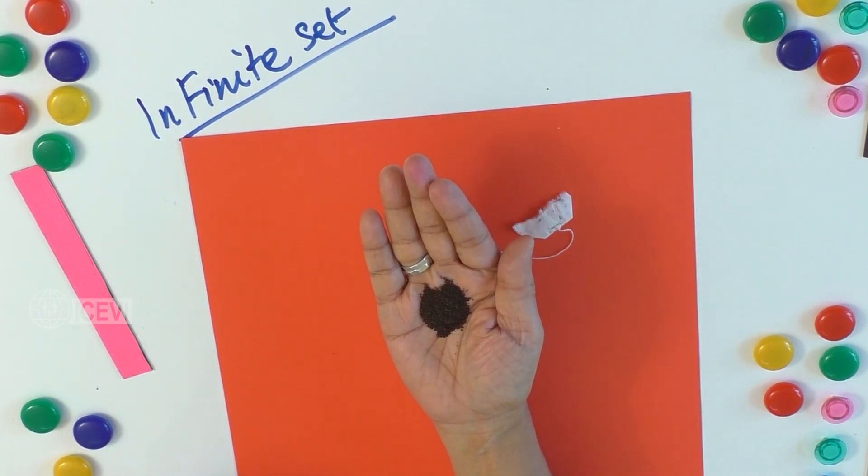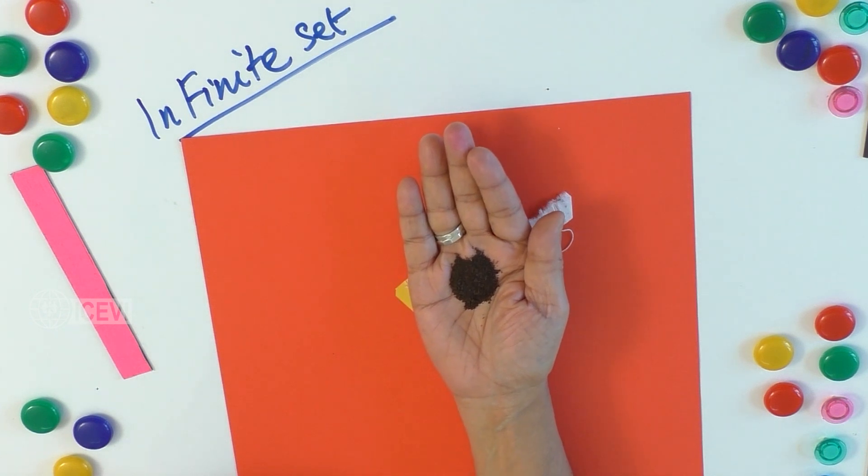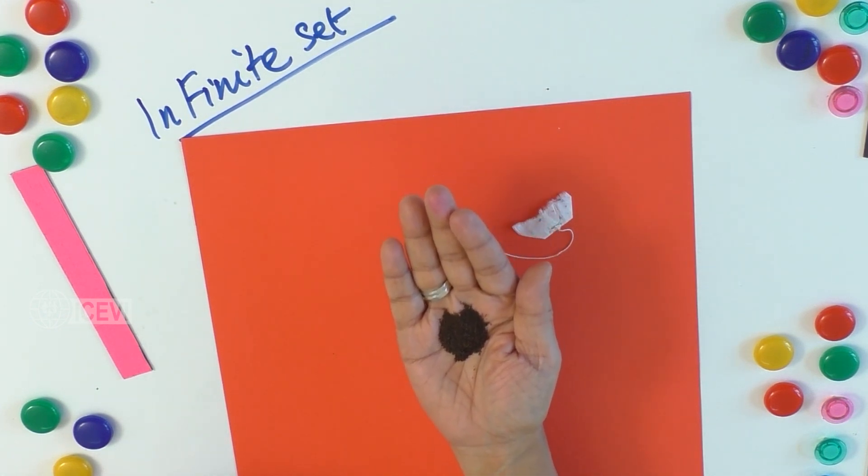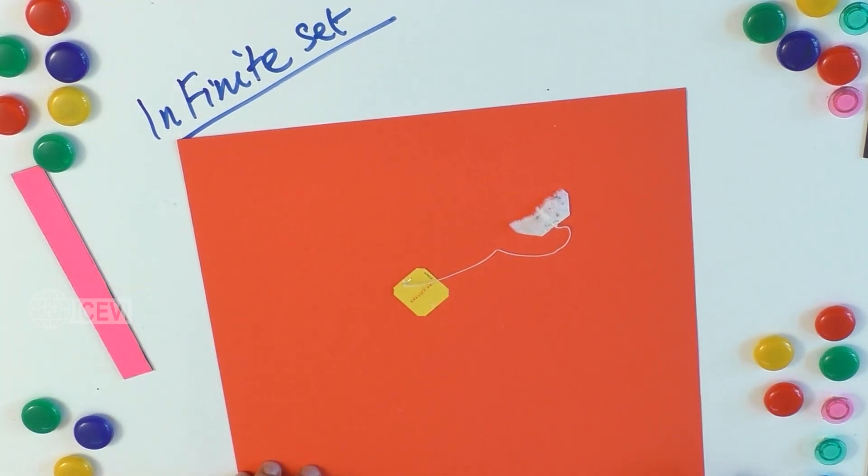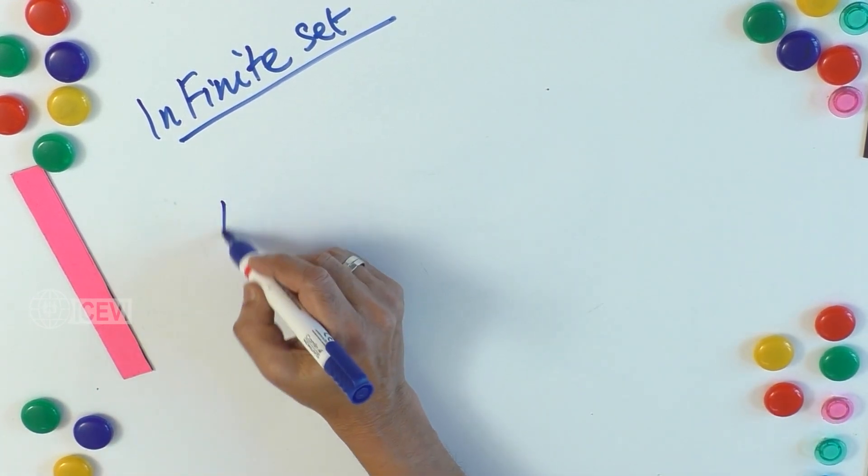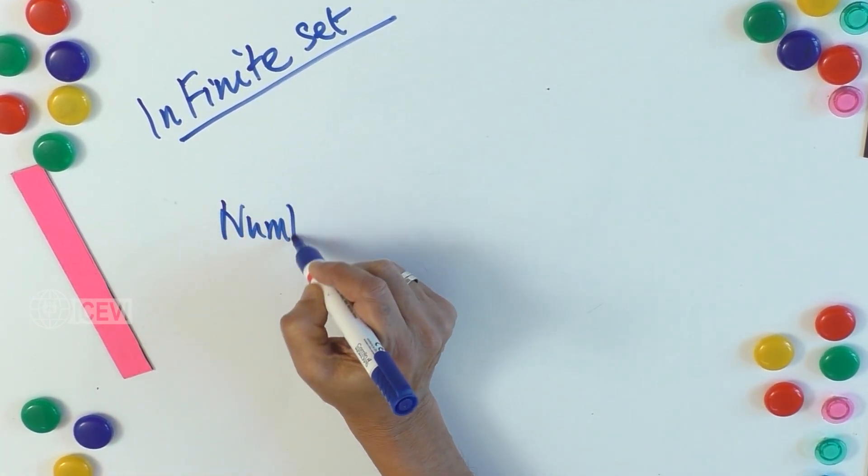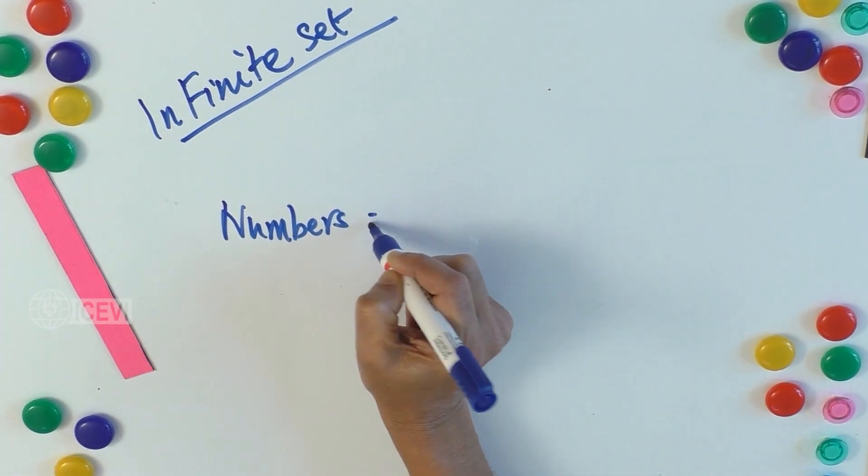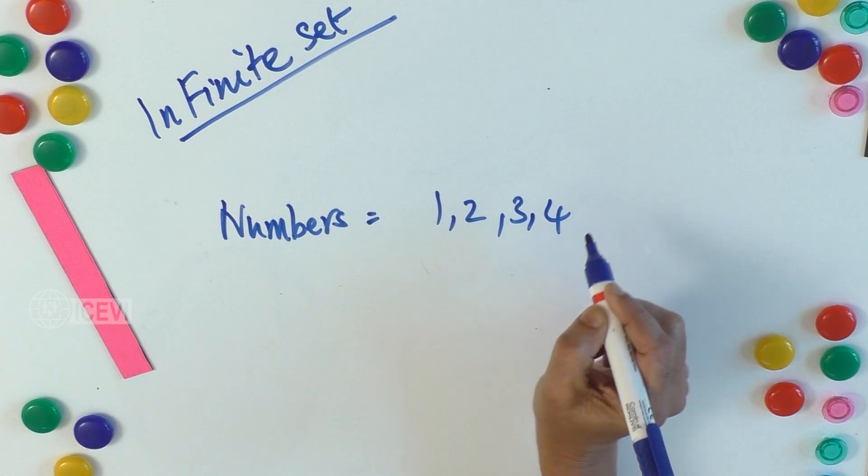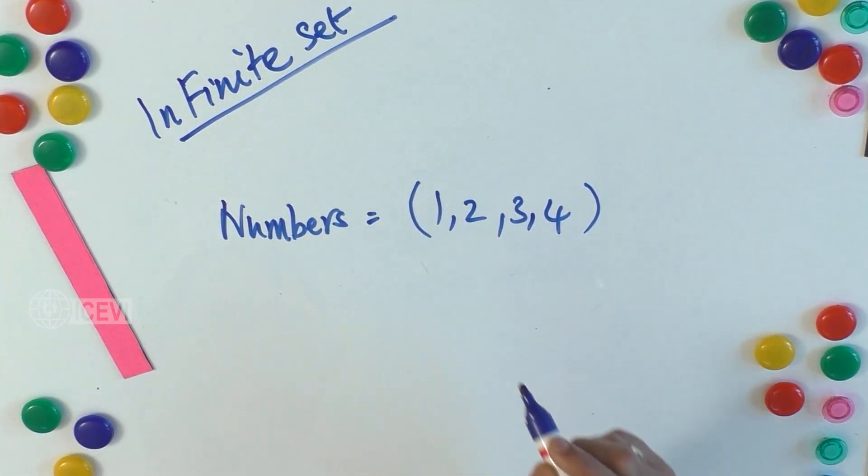That means the elements are uncountable, so we call this an infinite set. Now similarly, suppose we see the numbers. When you start with 1, 2, 3, 4, if you stop with that number, then it is countable.